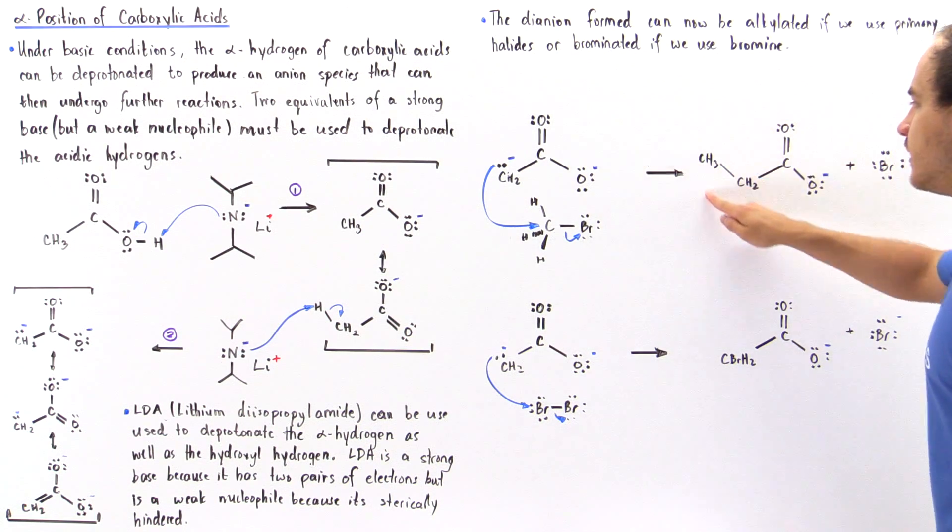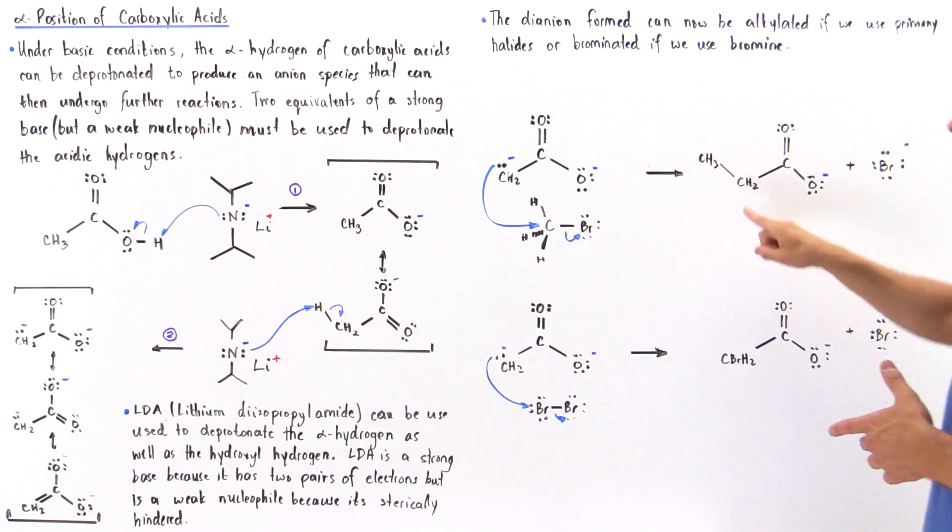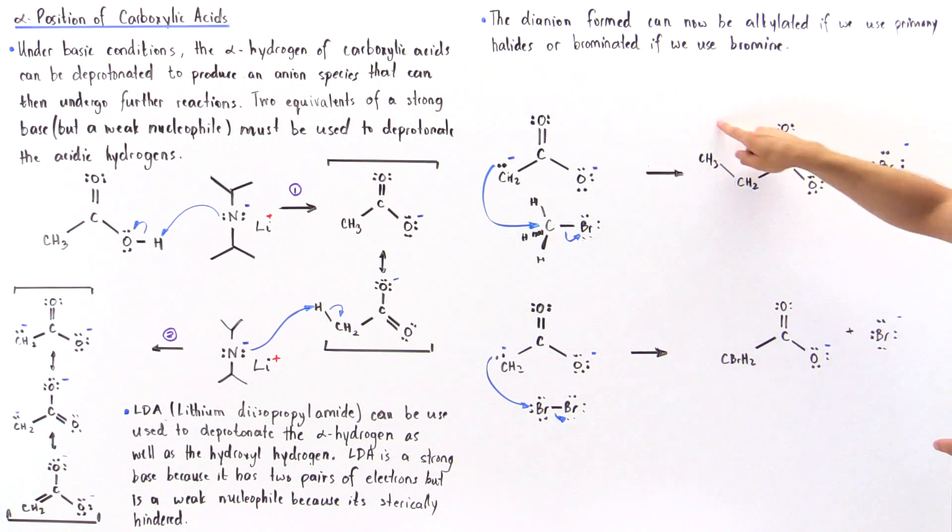So we form this alkylated carboxylate ion, and if we react it further, if we protonate this oxygen, we basically form our alkylated carboxylic acid in which the alpha position has been alkylated as shown.